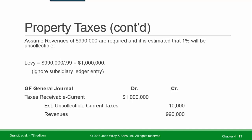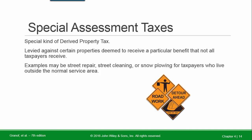Assume revenues of $990,000 are required and it is estimated that 1% will be uncollectable. Thus, we divide to get the gross levy of $1,000,000. In the general journal, the debit is to Taxes Receivable — Current. Revenue is the net amount expected to be received. There is also an allowance account — Estimated Uncollectable Current Taxes — that is credited. Special assessment taxes are a special kind of derived property tax, levied against certain properties deemed to receive a particular benefit that not all taxpayers received.